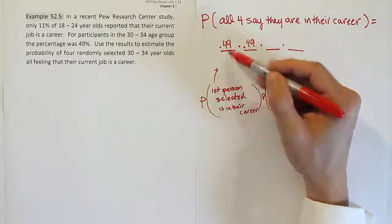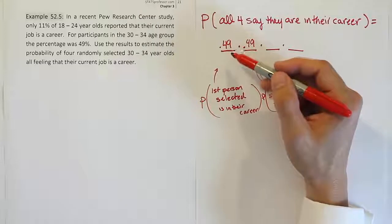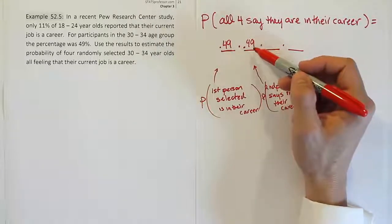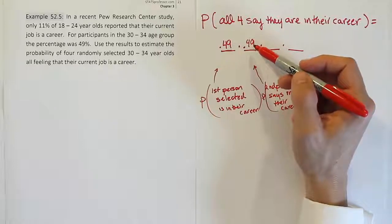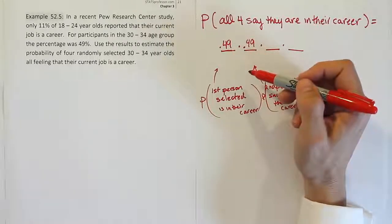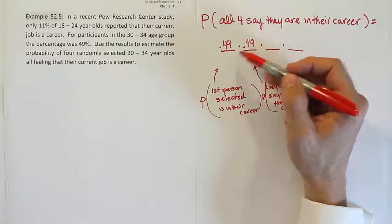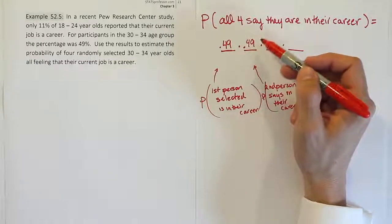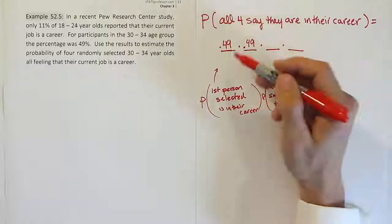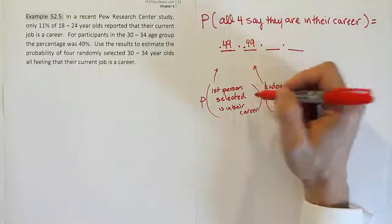Notice how if one randomly selected person out of the phone book or off the streets says they're in their career, that's not going to make it more or less likely that this person is in their career. The two should not affect one another as long as they're not connected in any way if they're just randomly selected from the population. I would say that this is an independent case where each of these probabilities should be unaffected by the others.